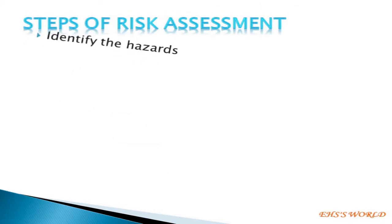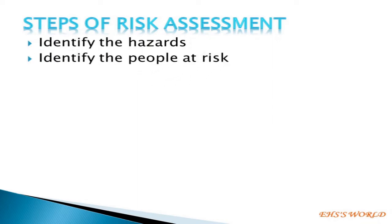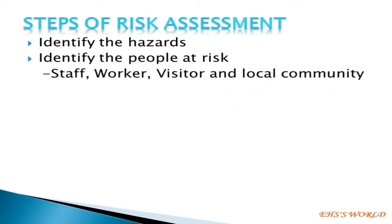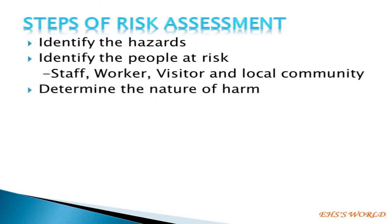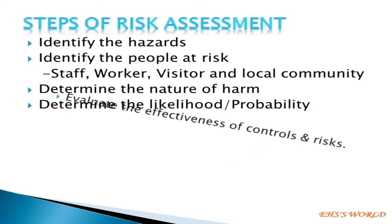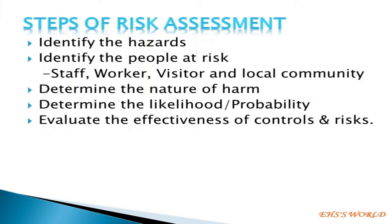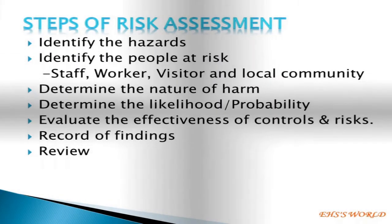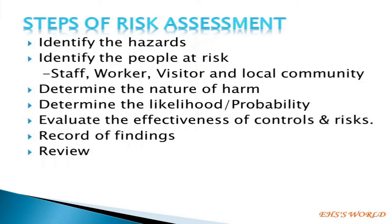The steps of risk assessment are: First, identify the hazards. Second, identify the people at risk, such as staff, workers, visitors, and the local community. Third, determine the nature of harm — which type of harm is associated with the activity. Fourth, determine the likelihood or probability of such kind of risk. Fifth, evaluate the effectiveness of control measures and risk. Sixth, record findings and review — after a certain period, the risk assessment should be reviewed.